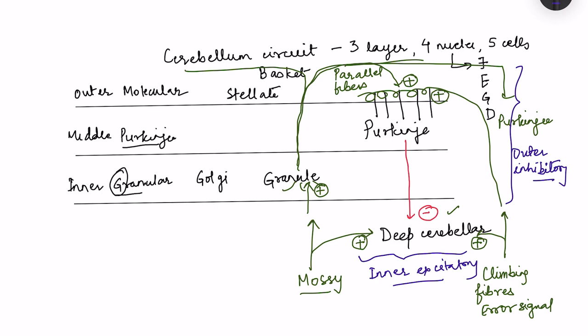There are also Golgi cells in the granular layer, and basket and stellate cells in the outer molecular layer. Granule cells are excitatory — they excite Purkinje cells, basket cells, stellate cells, and Golgi cells. However, basket cells, stellate cells, and Golgi cells are all inhibitory to other cells.